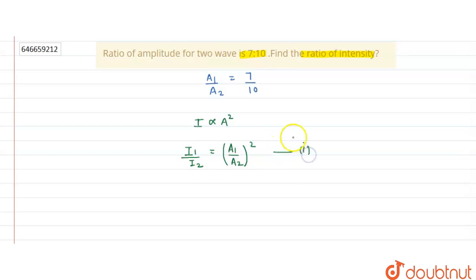Now simply we have to put the value of A1 by A2 in this equation 1, and we will get the ratio of intensity. So the ratio of intensity can be calculated as I1 by I2 equal to A1 by A2, which is given as 7 by 10.